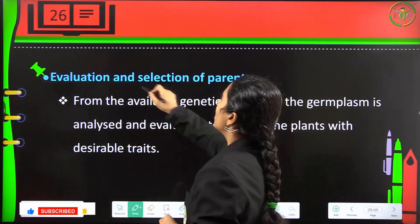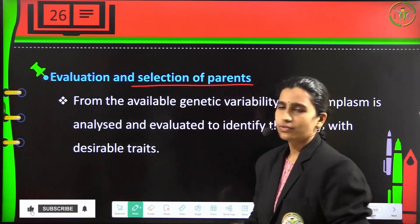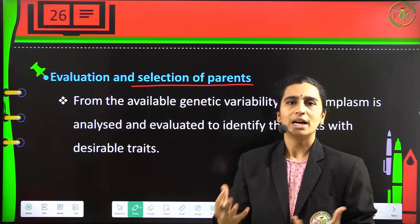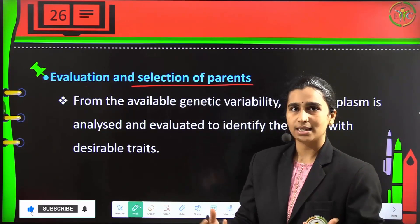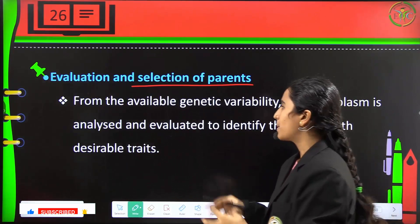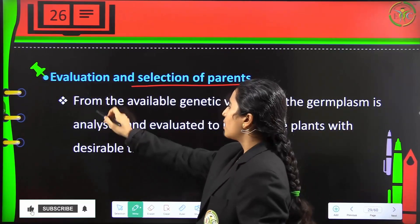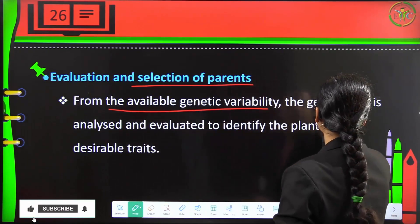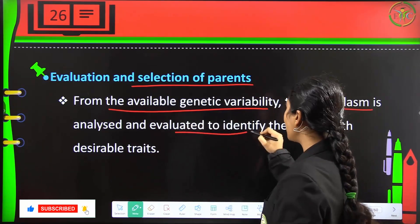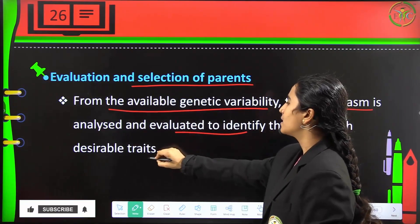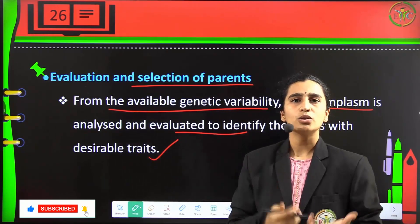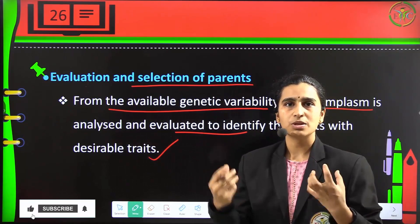The second step is evaluation and selection of parents. All related crops and wild crops are evaluated, and we select the ones which are going to be the parent crops to be bred. From the available genetic variability, the germplasm is analyzed and evaluated to identify plants with desirable traits.